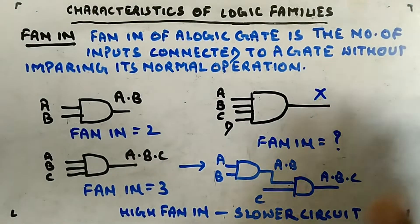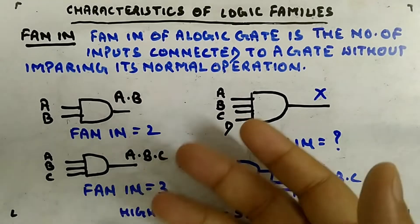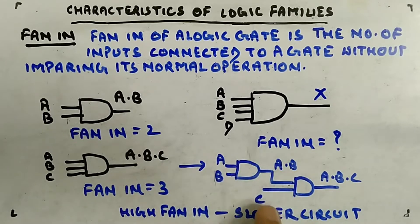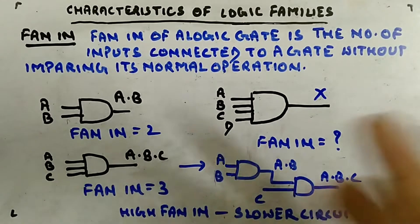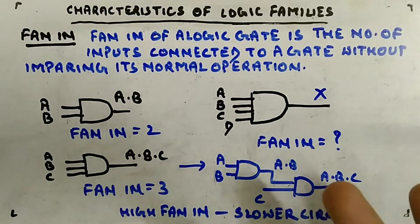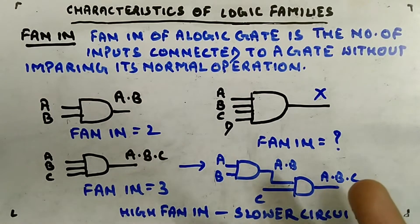The benefit of fan-in is that it can reduce circuit complexity. For example, a three-input AND gate can replace two two-input AND gates (A·B first, then ANDed with C), reducing the depth of the circuit. However, high fan-in leads to a slower circuit, while low fan-in results in faster operation. So fan-in depends on the requirement.